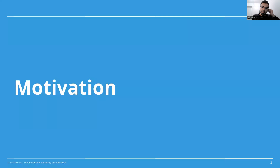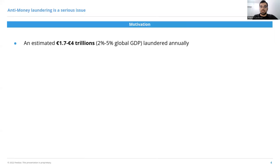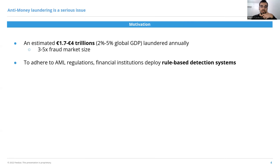I'll start by providing some motivation. As you're all probably aware, money laundering is a serious global issue. An estimated 2% to 5% of global GDP is laundered annually — that's three to five times the market size of transaction fraud. To comply with AML regulations, financial institutions must investigate and report money laundering situations.